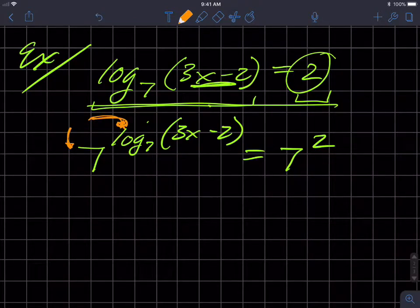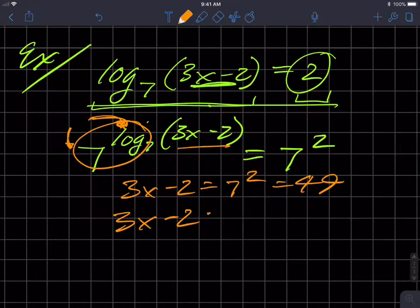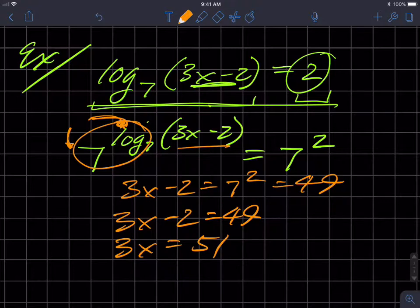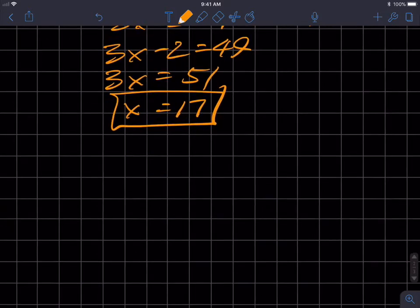So undoing each other, this becomes just that, 3x minus 2. And on the right-hand side, I have 7 squared. That's just a number, we know that's 49. And so I have 3x minus 2 equals 49. And I'll add 2 to both sides, you get 51, divide both sides by 3, and I get 17, and that's my answer. So a couple different ways you can go on that guy. But pick one and have fun. Of course, have fun. It's math.